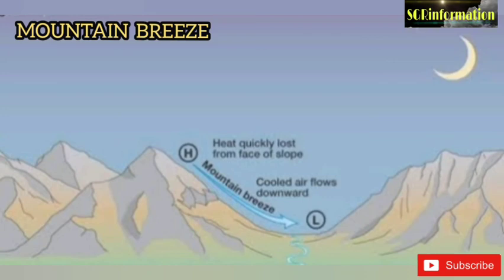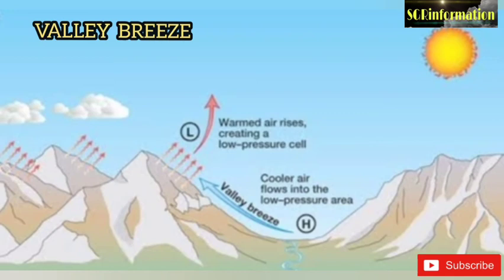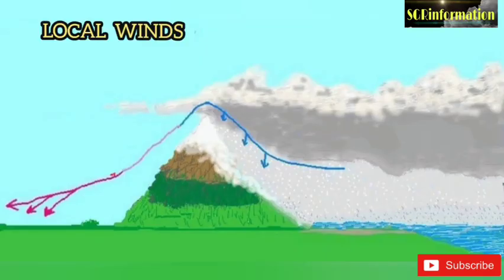Valley breeze: as the sun rises, its rays first fall on the mountain tops. By the time the sun rays reach the valley bottom, the air at the top of the mountain gets warm and moves upward by convectional current. To fill up the vacuum, cool air from the valley bottom blows in; it is called valley breeze.